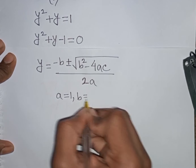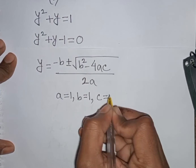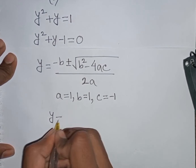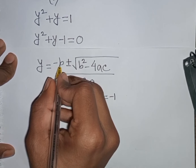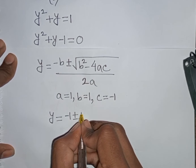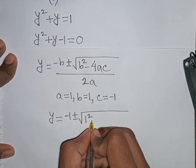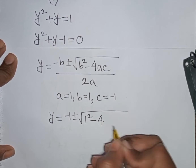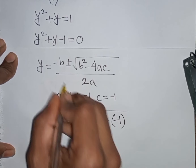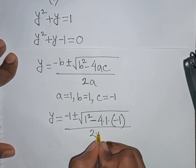Here a = 1, b = 1, and c = −1. So y = −1 ± √(1² − 4·1·(−1)) divided by 2·1.